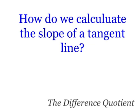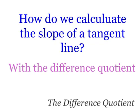We need to figure out a way to determine exactly what the slope of that tangent line is, and we do that using something called the difference quotient.